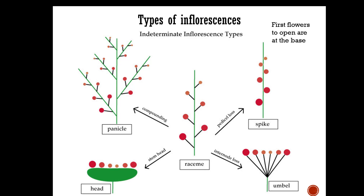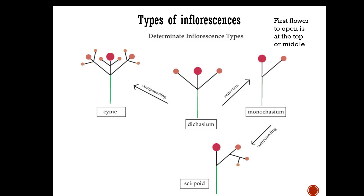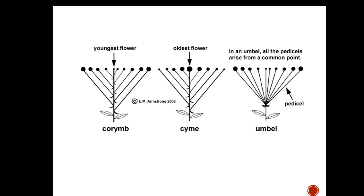Indeterminate inflorescences tend to have the first flowers open at the base; some types include the head, panicle, spike, or umbel. In a corymb, the youngest flower is in the center and will be the last to open. A cyme has the oldest flower in the center. In an umbel, all the peduncles arise from the same common point, and the plants typically in this group are in the carrot family.